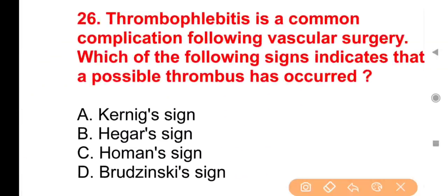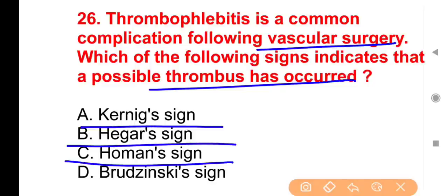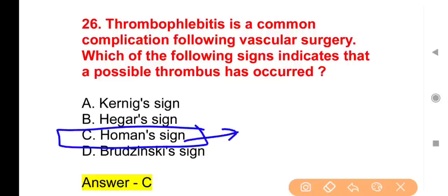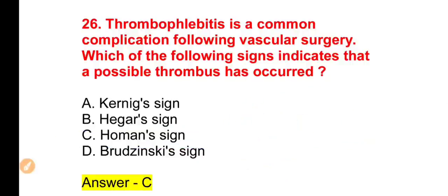Question 26: Thrombophlebitis is a common complication following vascular surgery. Which sign indicates a possible thrombus? Options: Kernig sign, Haggar sign, Homan sign, Bridgen's sign. The right answer is Option C — Homan sign. In thrombophlebitis or deep vein thrombosis, Homan sign is positive.